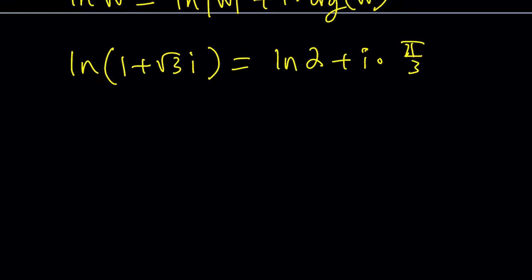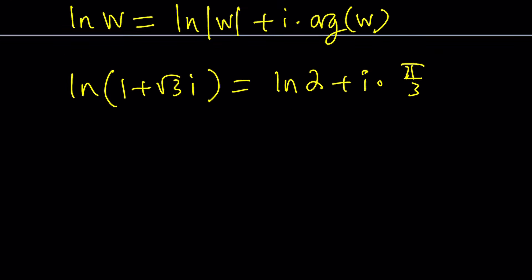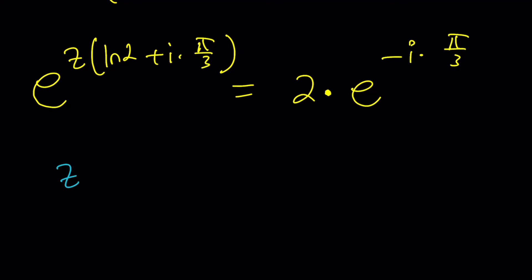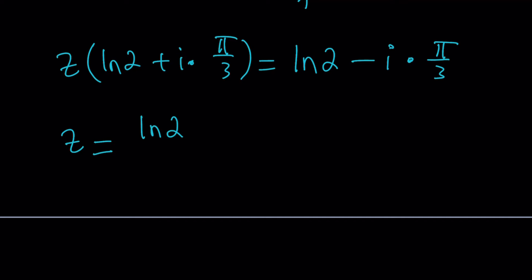Now, we can go ahead and plug this in. We have e^(z(ln 2 + iπ/3)). This is basically the left-hand side is equal to the right-hand side, which is 2e^(-iπ/3). So we kind of have exponentials on both sides. We can go ahead and naturally log both sides to bring all the powers down, and this is what we get as a result. z(ln 2 + iπ/3). And when you ln the right-hand side, that's going to be ln 2 + (-iπ/3). So we can put a minus sign here. We're basically finding the logarithm of the other number.